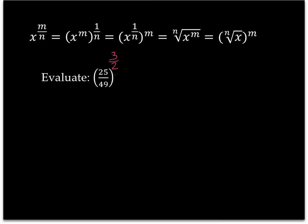Okay, for our last question of the lesson, this is 25 over 49 to the exponent of 3 halves. Good luck. Pause it now.